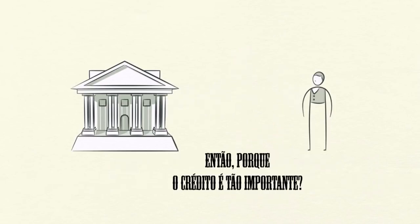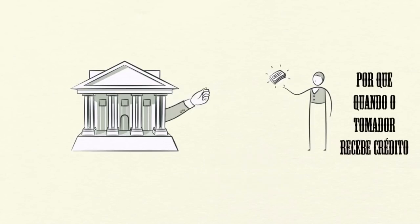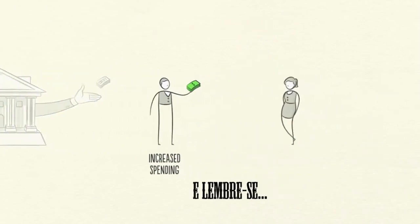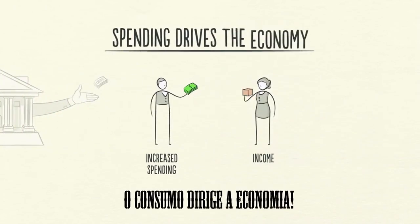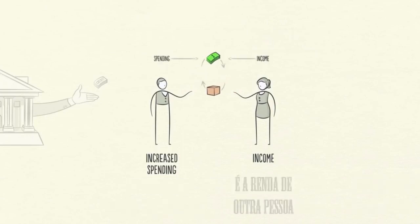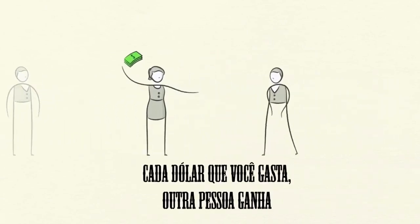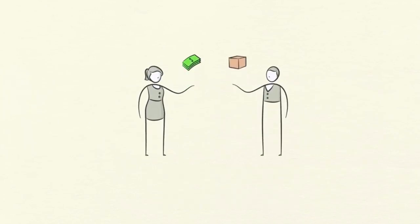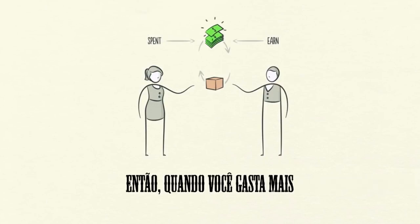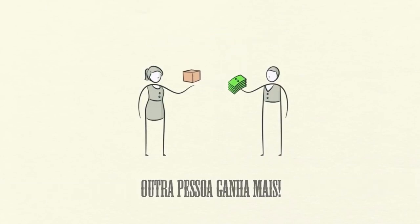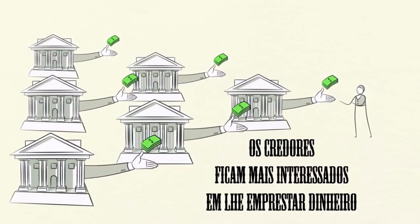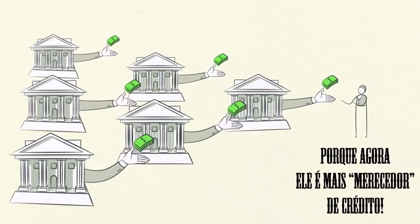So why is credit so important? Because when a borrower receives credit, he is able to increase his spending. And remember, spending drives the economy. This is because one person's spending is another person's income. Every dollar you spend, someone else earns. And every dollar you earn, someone else has spent. So when you spend more, someone else earns more. When someone's income rises, it makes lenders more willing to lend him money because now he's more worthy of credit.